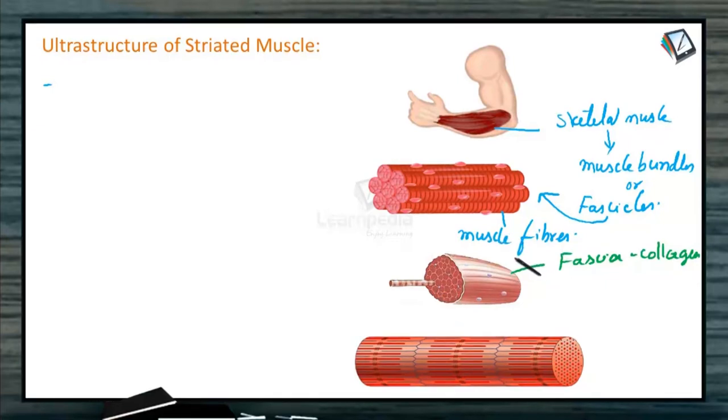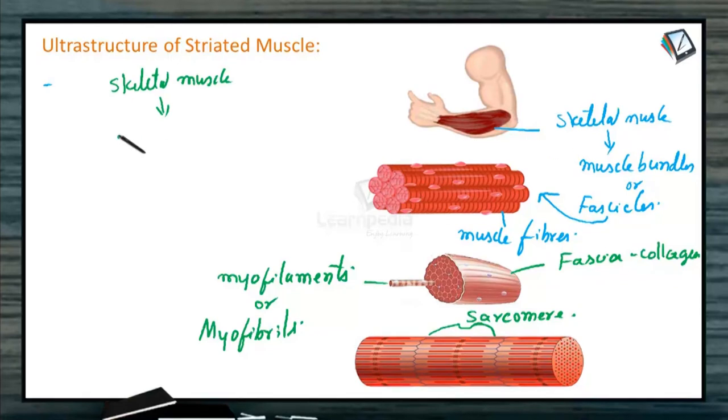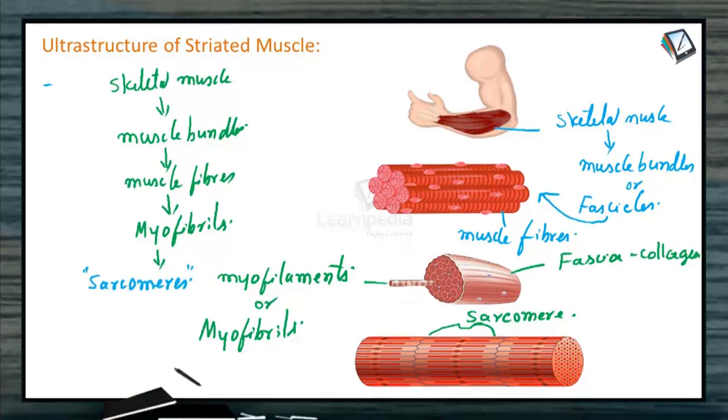Each fascicle contains, inside each muscle fiber, there are large number of parallelly arranged filaments called myofilaments. Or they are also called myofibrils. And each myofibril contains basic structural and functional unit of muscle cell that is called sarcomere. That is how a skeletal muscle is made up of several muscle bundles or fascicles. Each muscle bundle contains several muscle fibers. And each muscle fiber contains several myofibrils. And each myofibril, otherwise called myofilament, consists of several sarcomeres. Actually sarcomere is the structural and functional unit of striated muscle.